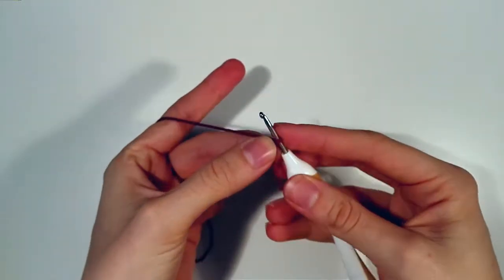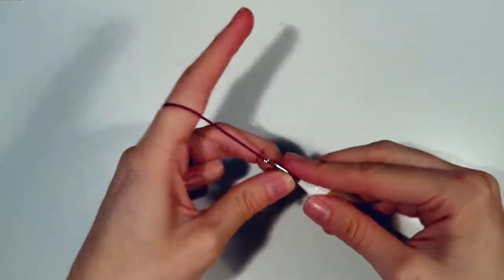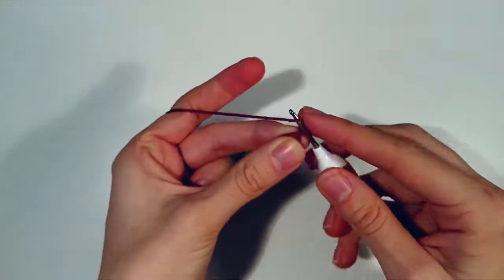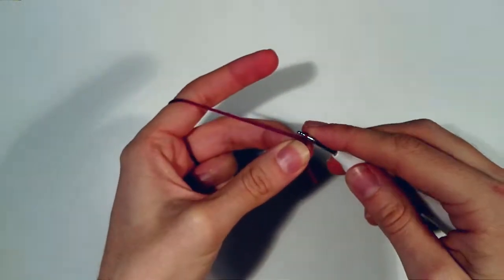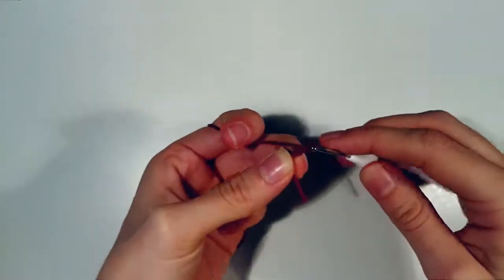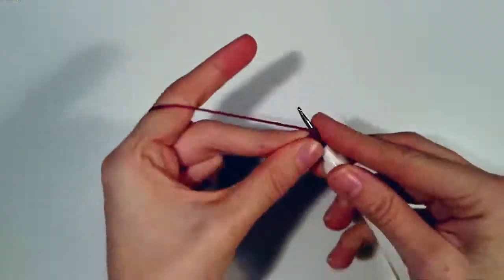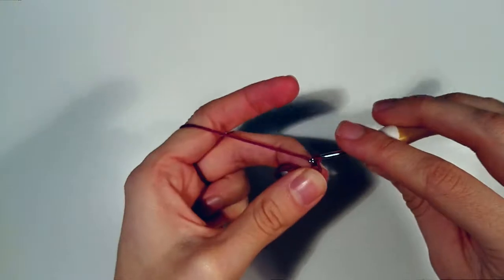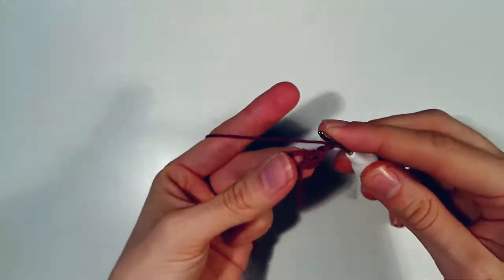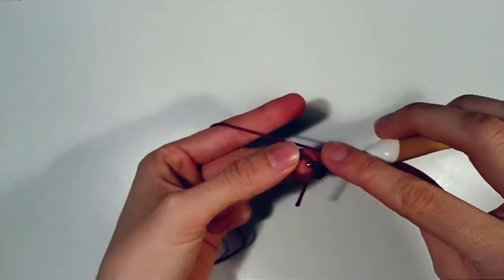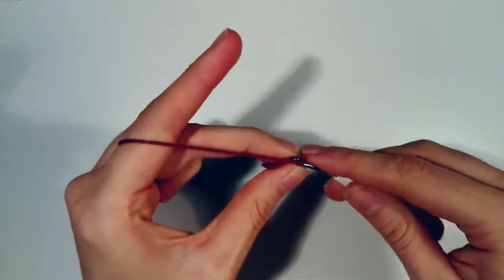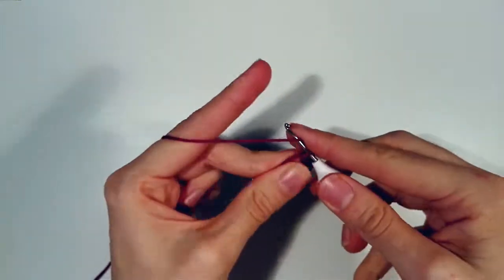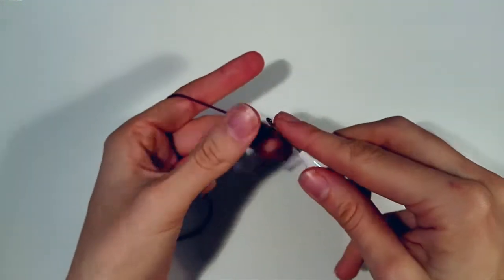And then for the rest of the pattern we're making five flower petals. And we're starting out with chaining two. So we chain two and we do a double crochet. And then we chain two again and then we do a slip stitch in our magic ring. And that's basically our first petal.